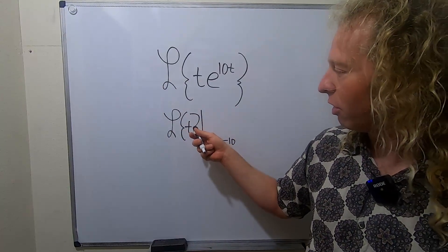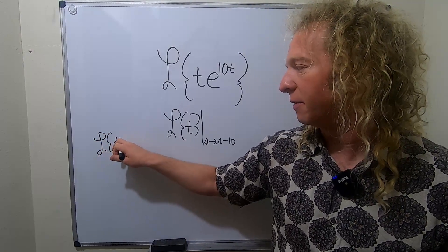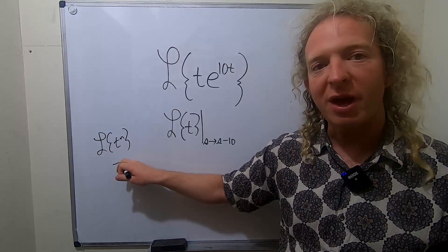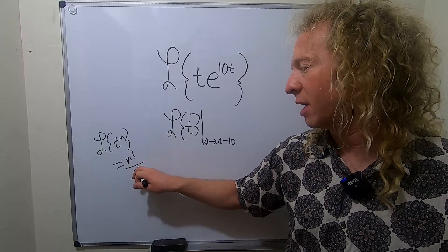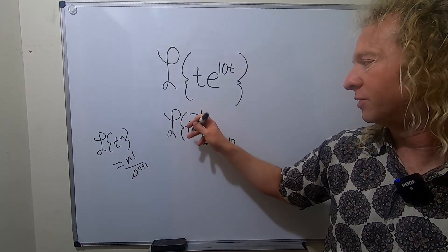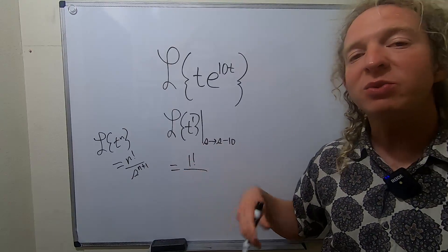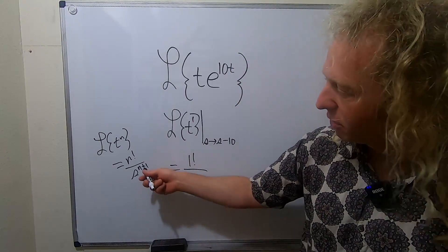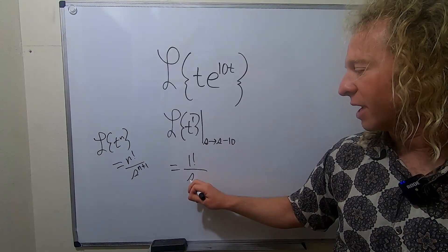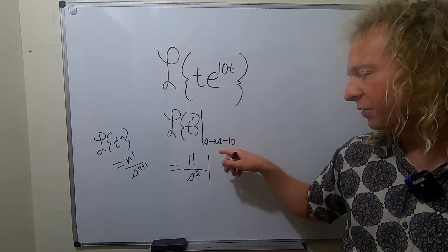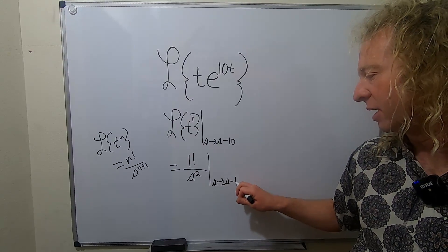Now we'll use the formula. Recall the Laplace of t to the n is equal to n factorial over s to the n plus 1. So there's a 1 here, so it's 1 factorial, and it's always 1 higher on the bottom — n plus 1 is 1 higher than n. So this gives s squared, and then we still have the notation for the shift: s to s minus 10.